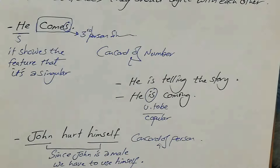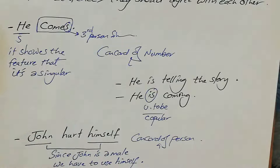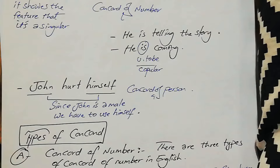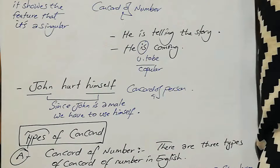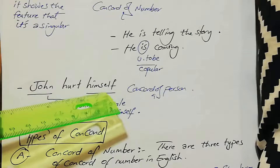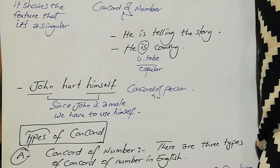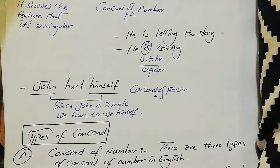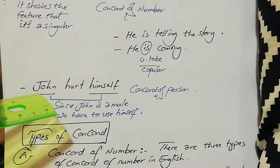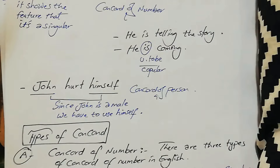'He is telling the story.' 'He is coming.' This verb comes from the verb 'to be' — a copular verb. Look at this example: 'John hurt himself.' Since John is a male, we have to use 'himself' — this reflexive pronoun. We have himself, herself, themselves. So there is an agreement between the subject and the pronoun here. This is a concord of person.